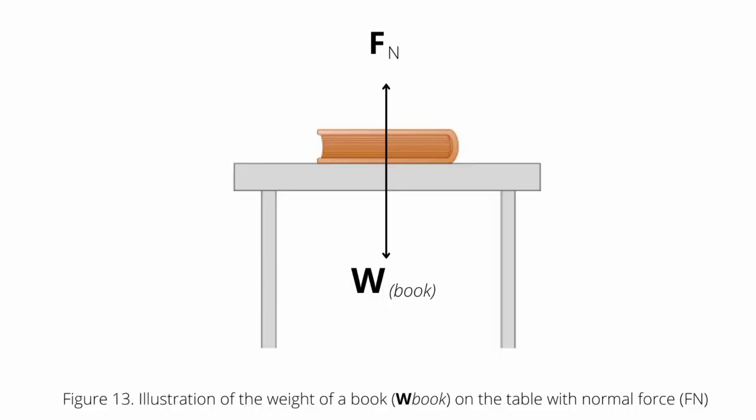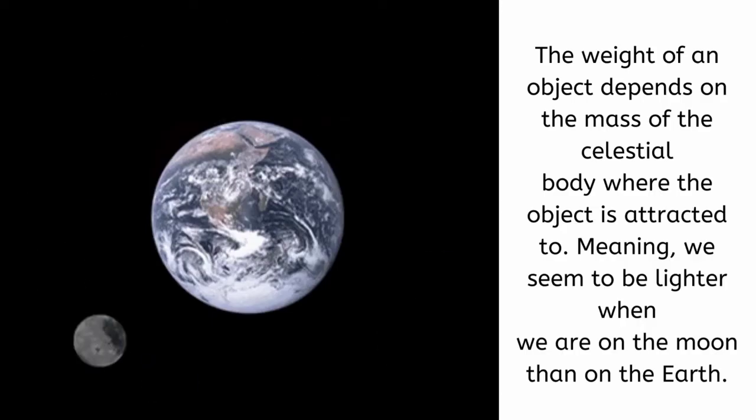The weight of an object, denoted by W, is an example of the gravitational force of the Earth towards the object. In figure 13, the weight of a book is illustrated. However, the weight of an object depends on the mass of the celestial body where the object is attracted to. Meaning, we seem to be lighter when we are on the Moon than on the Earth.